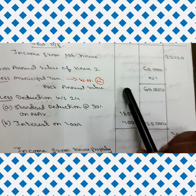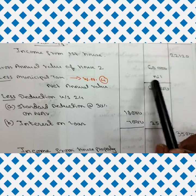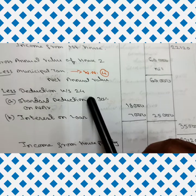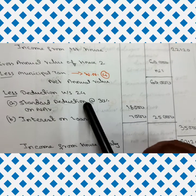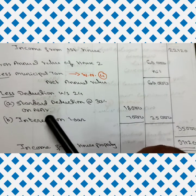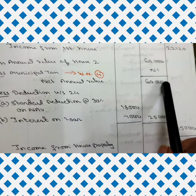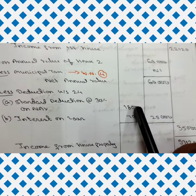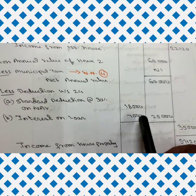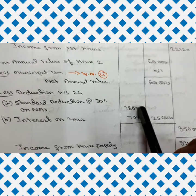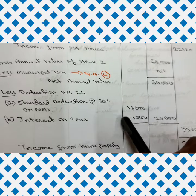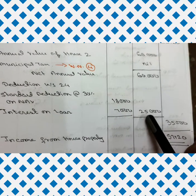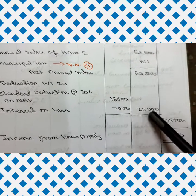From NAV of house two, deductions under Section 24: (a) Standard deduction at 30% on NAV: 30% of 60,000 = 18,000. (b) Interest on loan: 7,000. Total deduction = 25,000.